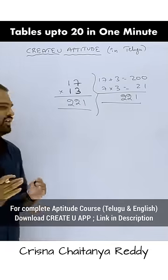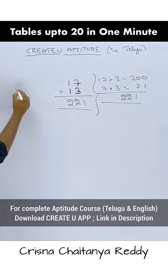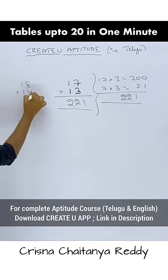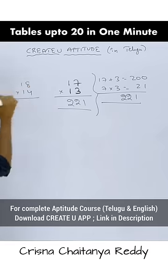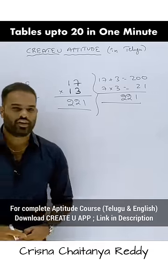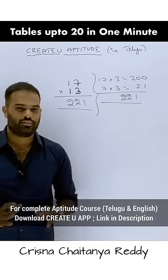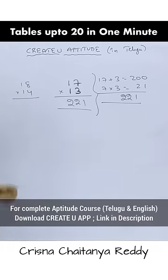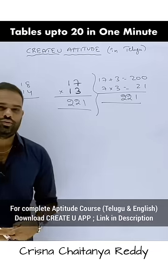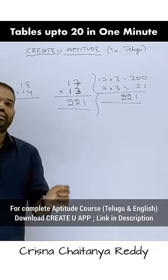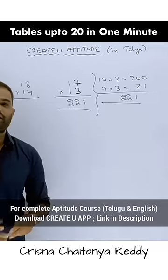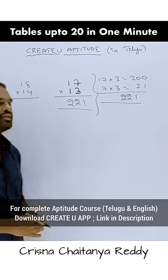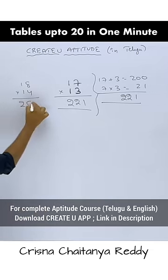We can explain very clearly. 18 to 14: 18 plus 4 is 22. If you have 22, we can run around 220. 8 to 4 is 32. We can run around 220 plus 32, and the answer is 252.